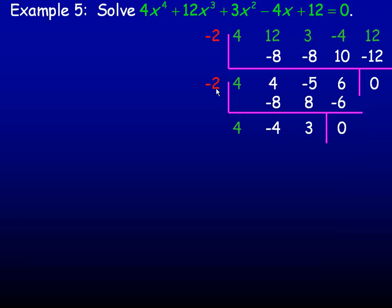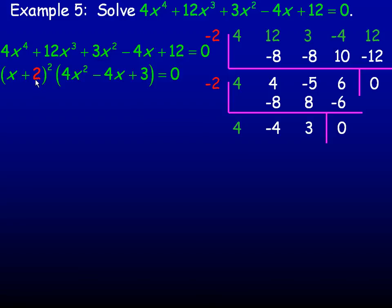So negative 2 worked twice. We actually have a double root there, or a double factor. And so here's our quartic equation. I'm just copying down the original one. And negative 2 worked twice. So when we factor this, we get (x + 2)². And then what's left here, 4, negative 4, 3, is 4x² - 4x + 3.